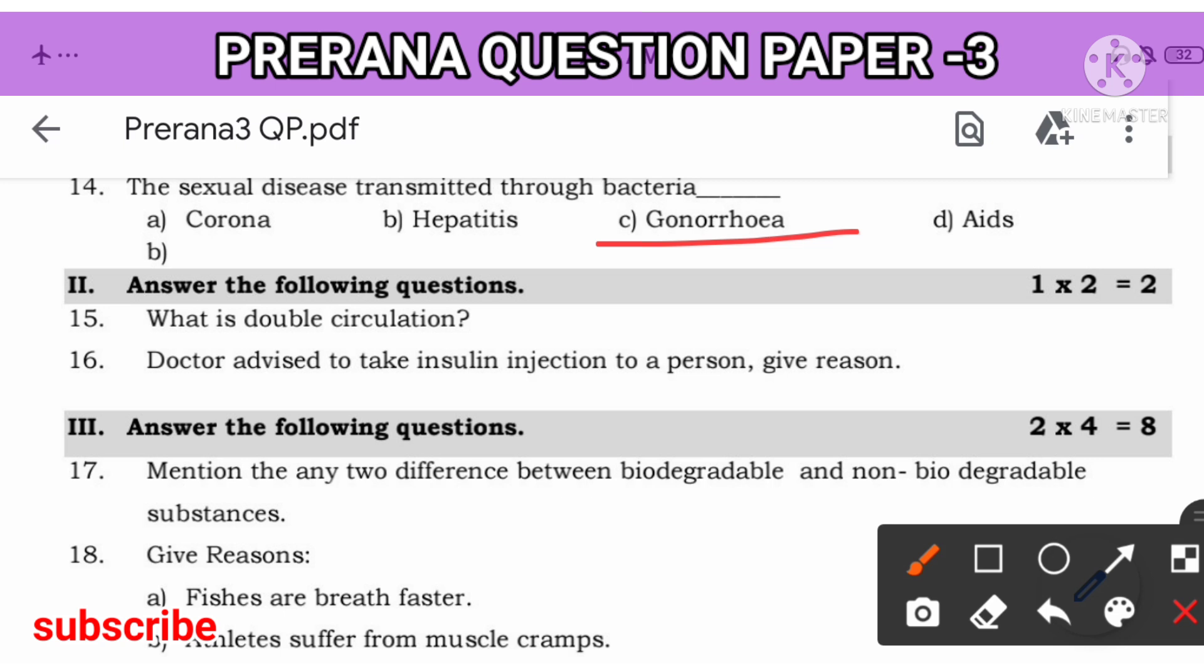Next question, fifteen: What is double circulation? You know this. What happens: the blood flows through the heart two times in one cycle. This is called as double circulation. You should explain. How blood enters right part of the heart, left part of the heart. You must explain. I have shared this video in telegram. Very easy. How to answer. Yesterday, I have shared it in telegram.